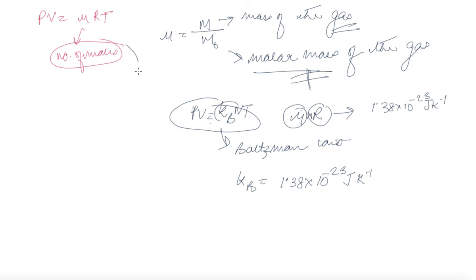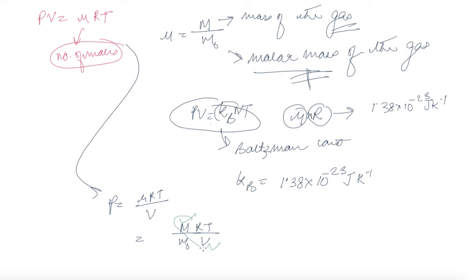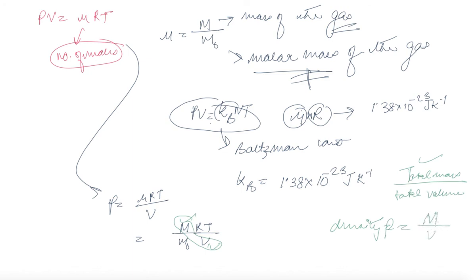Another useful derivation is P = mu*R*T / V, and since mu = m / m0, we get P = (m / m0) * R*T / V. Clubbing m and V together gives total mass divided by total volume, which is density rho. So the formula becomes P = rho * R*T / m0, which is another way of defining the ideal gas equation.